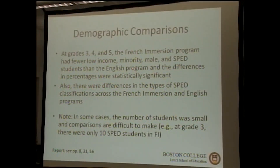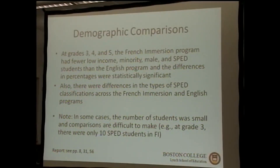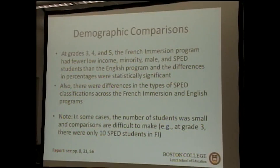As discussed last time, there are measured and unmeasured differences between program types. Because students are not randomly assigned to the French or English program, you get self-selection issues — not just demographic characteristics, but other things correlated with demographics. One of the things we try to do is statistically control for some of these demographic differences, but it's clear from the outset that the two programs have quite different breakdowns of student demographics.